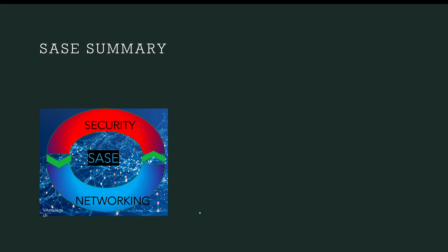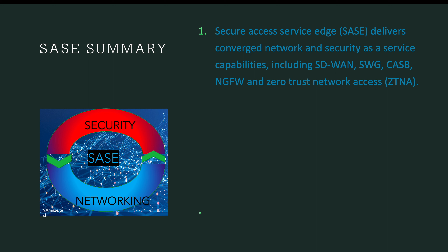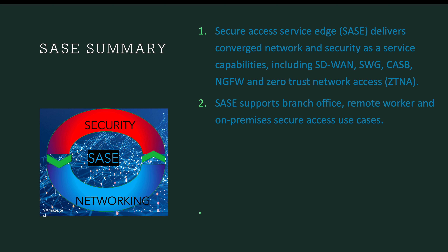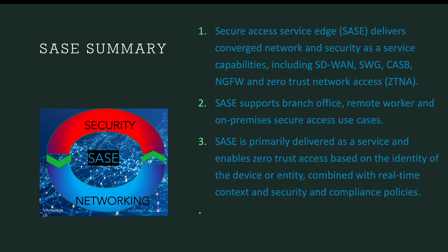Let's look at the summary of what we have learned so far. Secure Access Service Edge (SASE) delivers converged network and security as-a-service capabilities, including SD-WAN, Secure Web Gateway, Cloud Access Service Broker, Next-Generation Firewall, and Zero Trust Network Access (ZTNA). SASE supports branch office, remote workers, and on-premises secure access use cases. It is primarily delivered as a service and enables zero trust based on the identity of devices or entities, combined with real-time security and compliance policies and continuous verification.